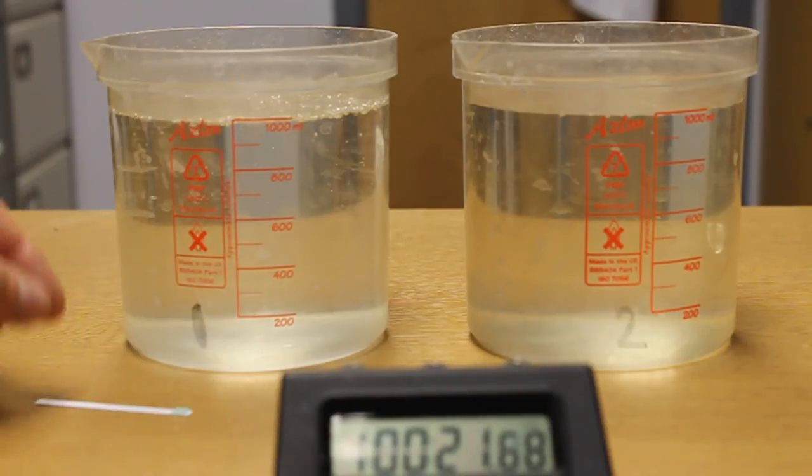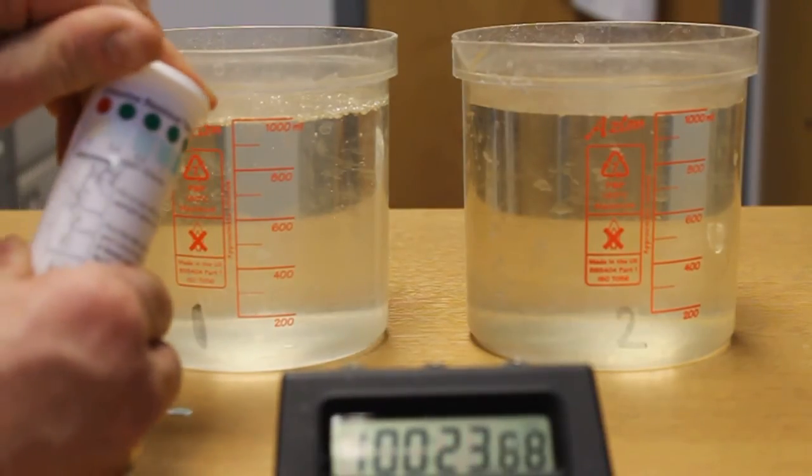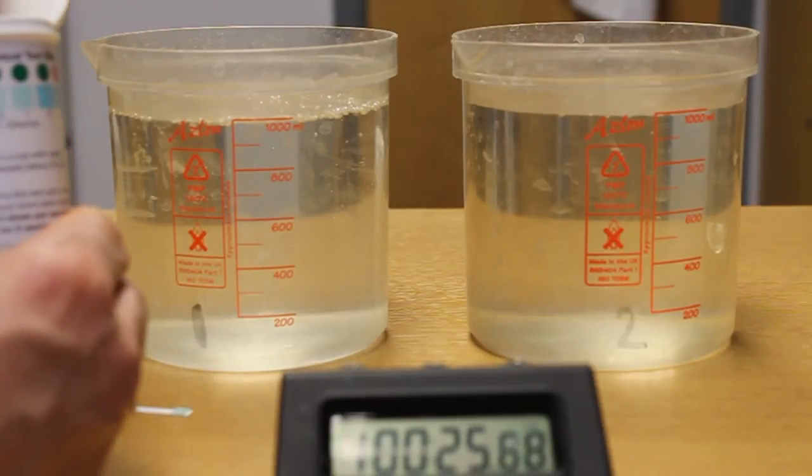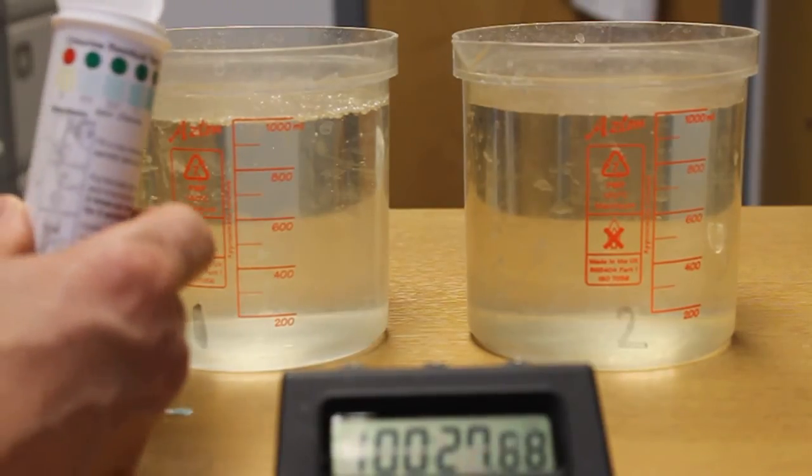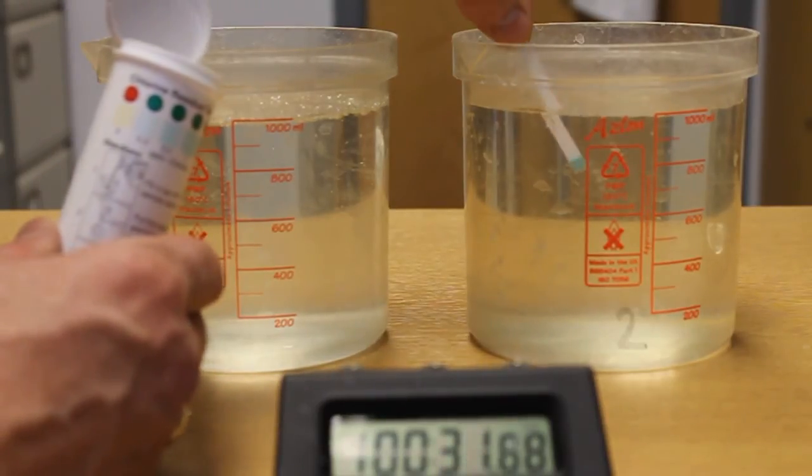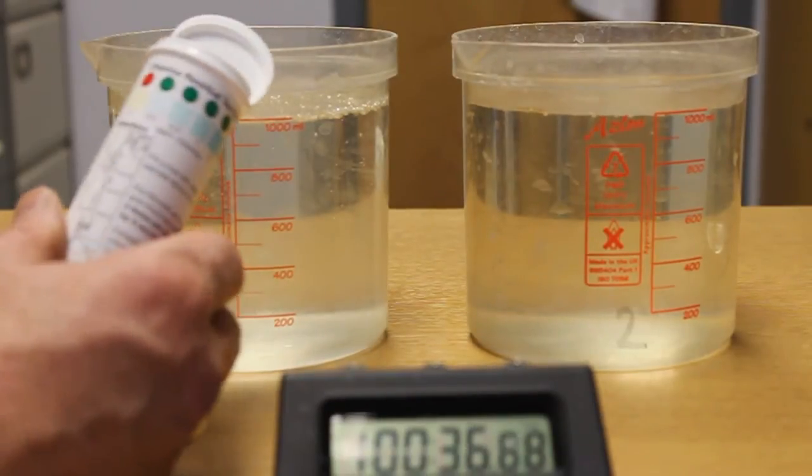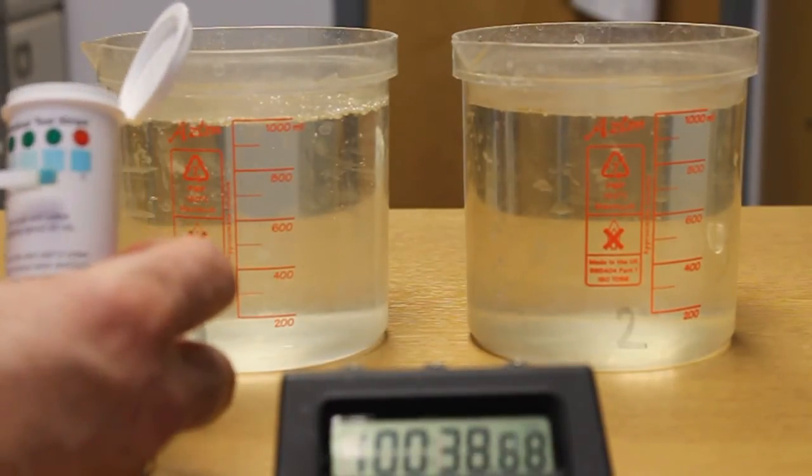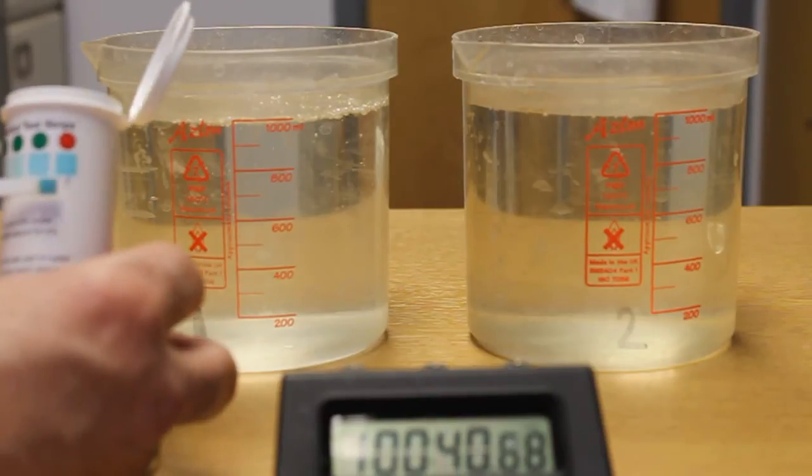Now we will test the one with two tablets, much the same way. Take out the strip, put it in the water. 1 second, 2 second, 3 second, 4 second, 5 second. And we can check it against the water. As you can see it is much stronger colour coming up to around between 2 and 5.